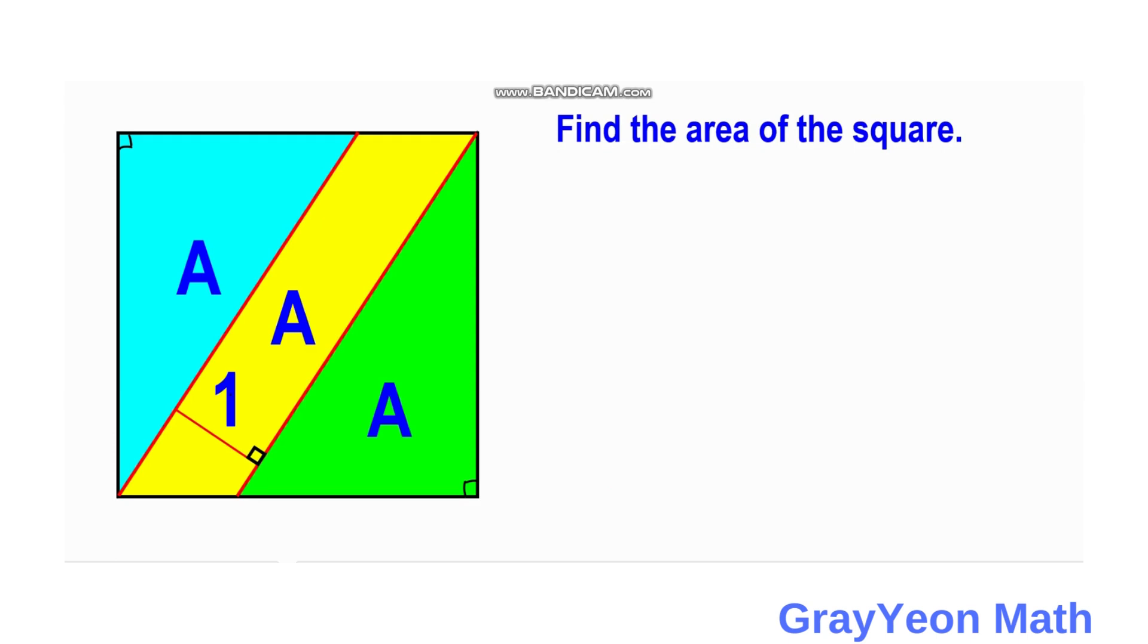First thing that we have to do is we need to label the lengths of this figure. So let us label the side of the square as S. And this side is actually also one leg of this blue triangle. And we label this other leg of this right triangle as X.